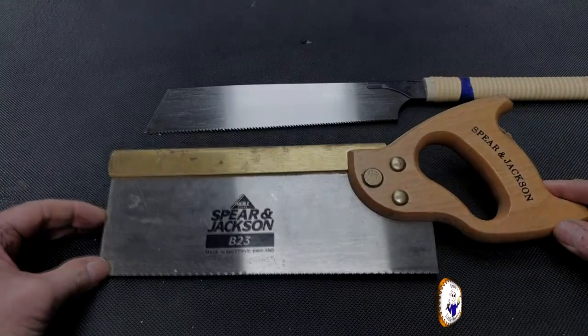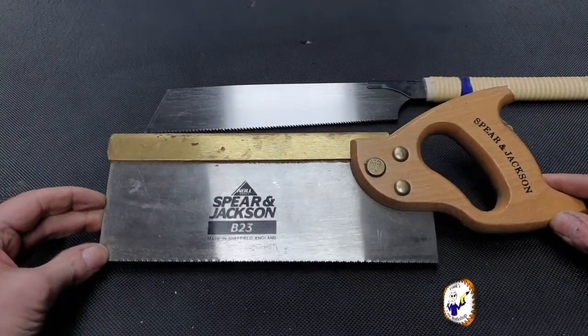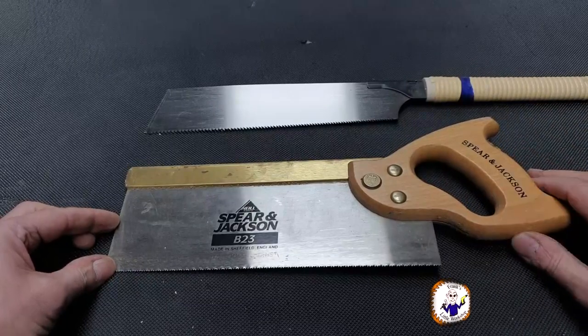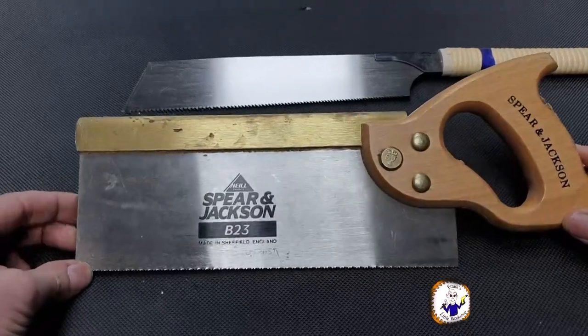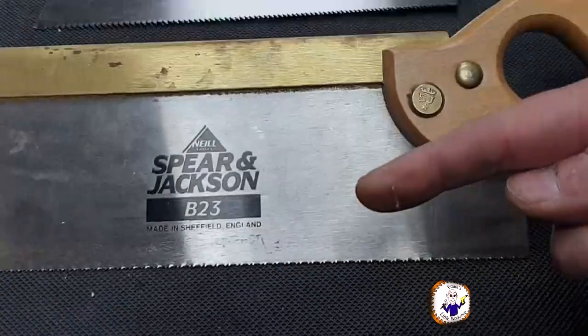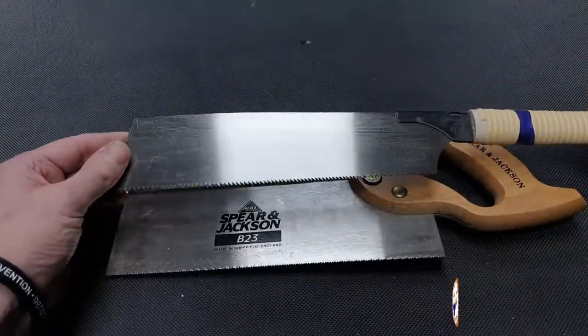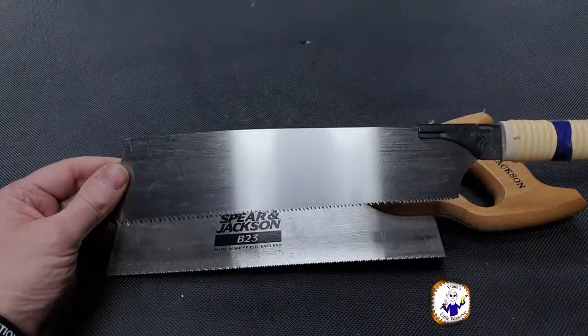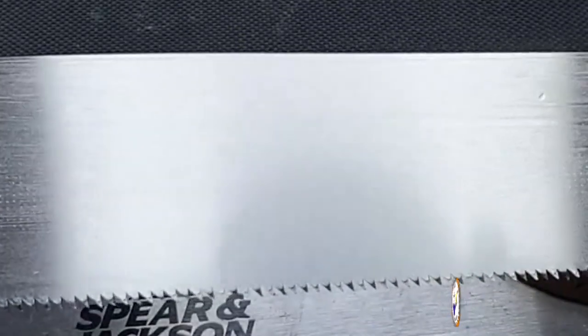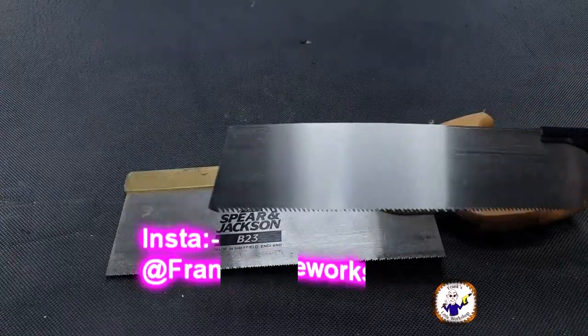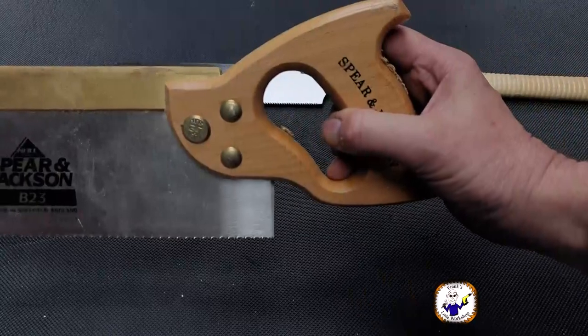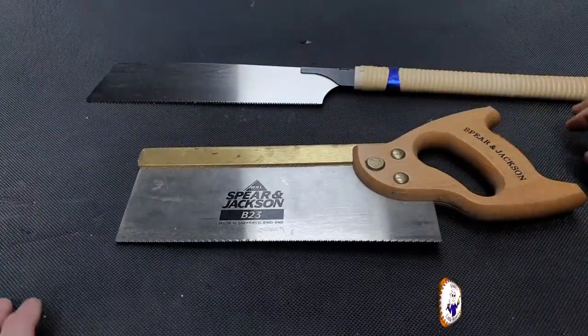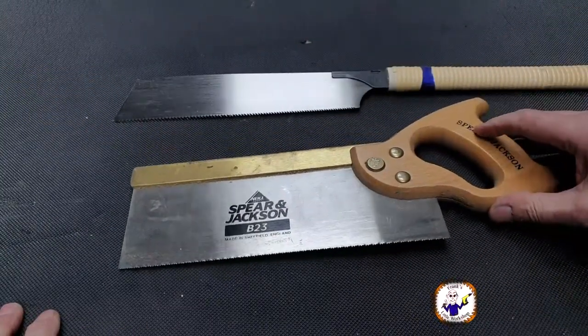To explain the principles here of why you have it facing one way or the other, I've got two different types of saws. Both of these can be used for making dovetail joints, but the design of the teeth is different. On this one the teeth face forwards—away from the handle—and on this one the teeth face towards the handle. This one towards the handle is a pull saw, so it cuts when you're pulling towards this handle. And this one cuts when you're pushing away.